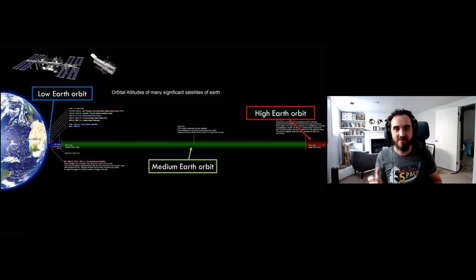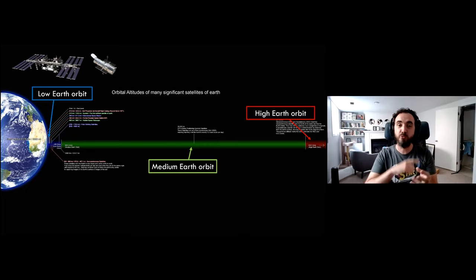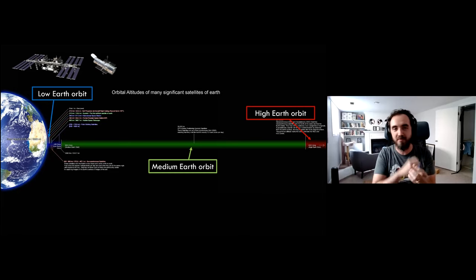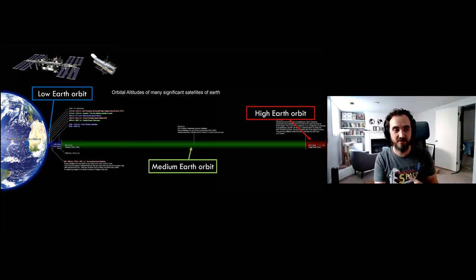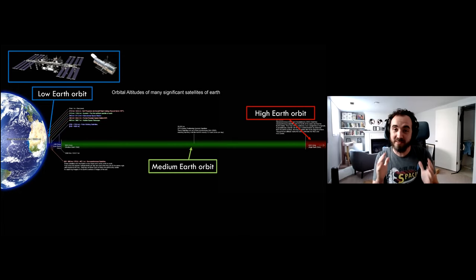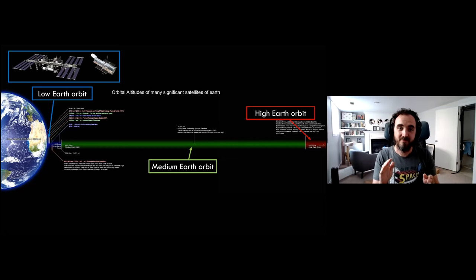Orbits are basically the loops you get caught in when you're outside of a planet — just like Earth orbits the Sun and the Moon orbits the Earth. We can send satellites or spacecraft into Earth orbit and they'll just go around Earth all the time, never stopping. But depending on how high you go, it changes what you can do. In low Earth orbit we have things like the International Space Station and the Hubble Space Telescope.